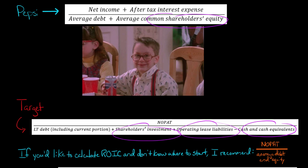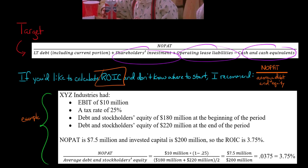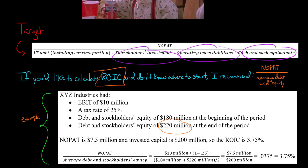This might be confusing because there are so many different approaches. If you want to calculate a company's return on invested capital, I recommend using this basic formula: NOPAT in the numerator, and the average of debt and stockholders' equity in the denominator. Let's do an example with that. Say there's a company called XYZ Industries with earnings before interest and taxes of ten million dollars, a tax rate of 25 percent, debt and stockholders' equity of 180 million at the beginning of the period and 220 million at the end.